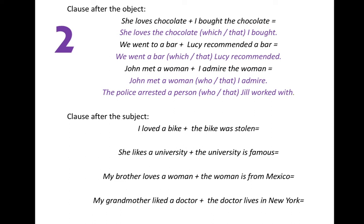Let's do the opposite procedure — separate that into two clauses: 'The police arrested a person' and 'Jill worked with a person.' The person is replaced by the relative pronoun, and the person is the object of the verb and the preposition. That means you can remove it: 'The police arrested a person Jill worked with.' Because the relative pronoun is replacing the object of the verb, the relative pronoun is optional.